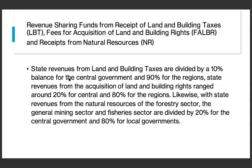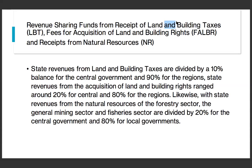For state revenue from natural resources in the forestry sector, general mining sector, and fisheries sector, it is divided as 20 percent for the central government and 80 percent for the local government. Regarding oil and gas, state income from petroleum mining — after deducting the tax component — is divided into 85 percent for the central and 15 percent for the regional government. State income from natural gas mining from the regional area, after deducting the tax component, is 70 percent for the central government and 30 percent for the regional government.